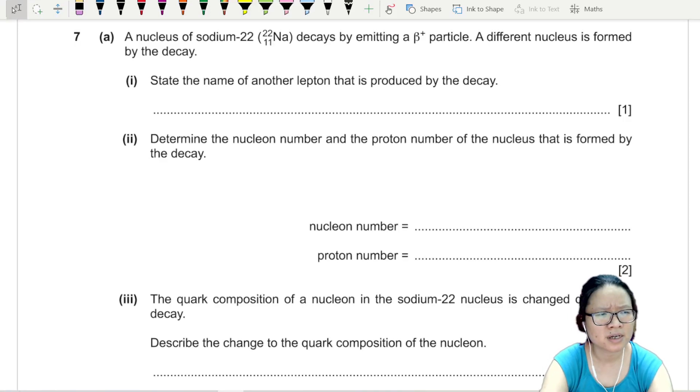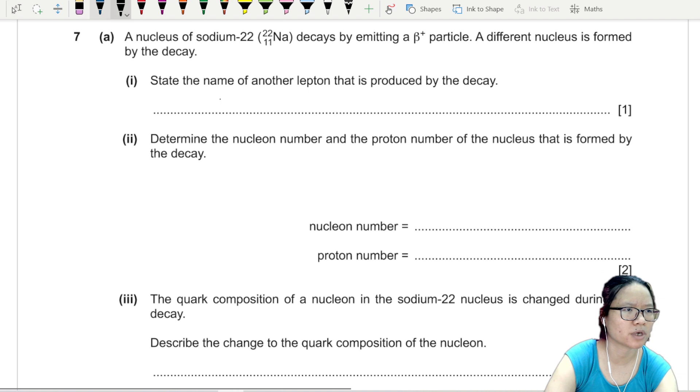All right, question 7. A nucleus of sodium-22 decays by emitting a beta plus particle. Very familiar. A different nucleus is formed by the decay. State the name of another lepton.